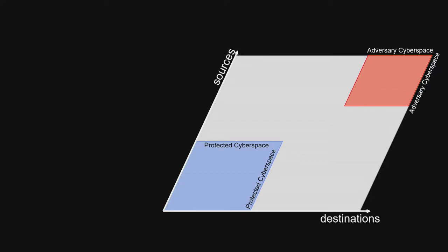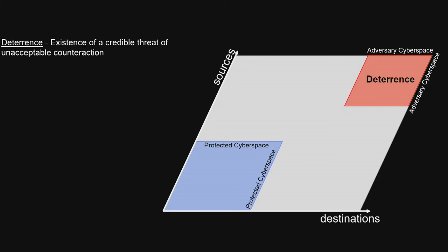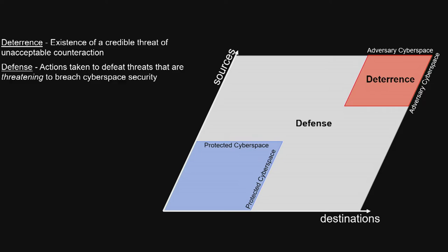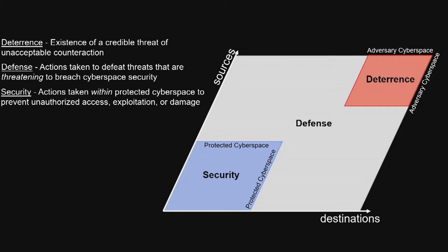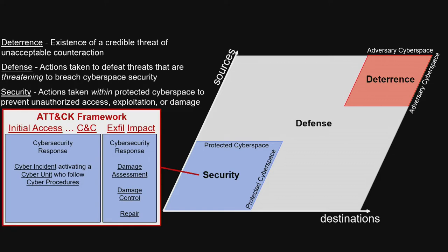We can now overlay standard approaches that are used to protect any domain. Deterrence is the existence of a credible threat of unacceptable counteraction. Walls-out defense are actions taken to defeat threats that are threatening to breach cyberspace security. Walls-in security are actions taken within protected cyberspace to prevent unauthorized access, exploitation, or damage. Security is the dominant investment today and involves identifying and countering actions described by the attack framework, taking place almost entirely within protected cyberspace. Historically, in other domains, walls-out defense has been the most cost-effective and de-escalatory approach because threats are defeated before they reach protected cyberspace, greatly reducing the potential benefit of an attack.